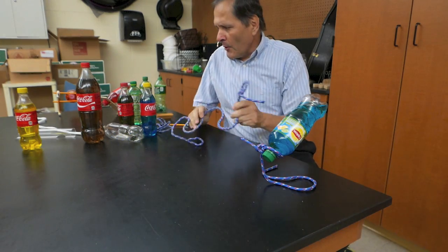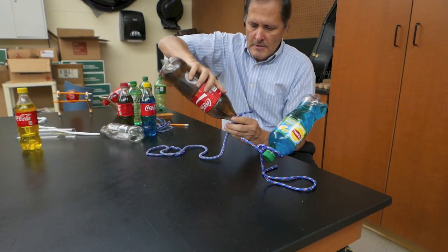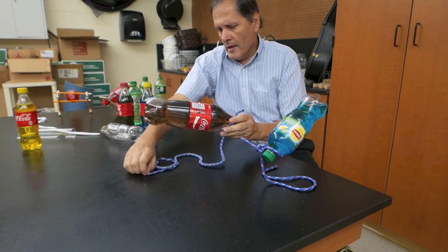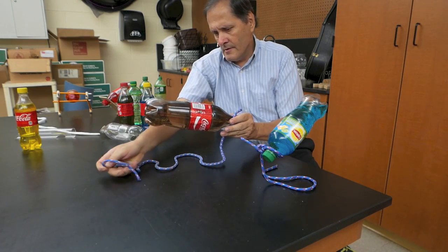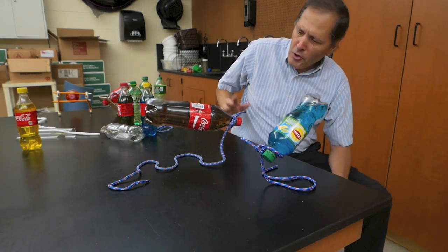Now I do have another piece of rope that's going to accommodate a larger bottle. Once again, stick it through that loop. And once again, there's another balancing bottle, a little bit bigger.